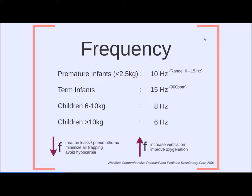Starting frequency can be predicted based on patient size and age. Premature infants under 2.5 kg start at about 10 Hz (range 6–15 Hz); don't exceed 15 Hz as it causes air trapping. Term infants start around 15 Hz — about 900 breaths per minute. Children 6–10 kg use about 8 Hz; children over 10 kg use 6 Hz. For air leaks or pneumothorax, decrease frequency to minimize air trapping and avoid hypocapnia.